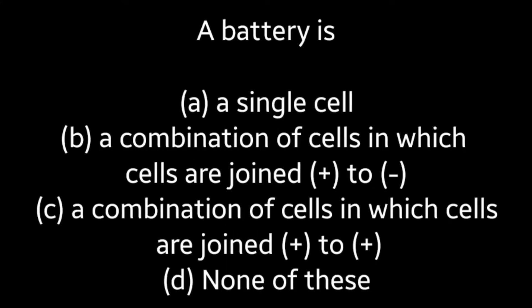Next question: A battery is (A) a single cell, (B) a combination of cells in which cells are joined positive to negative, (C) a combination of cells in which cells are joined positive to positive, (D) none of these.